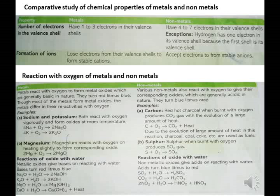Non-metals accept electrons to form stable anions (negative ions). Cations are positive ions and anions are negative ions.